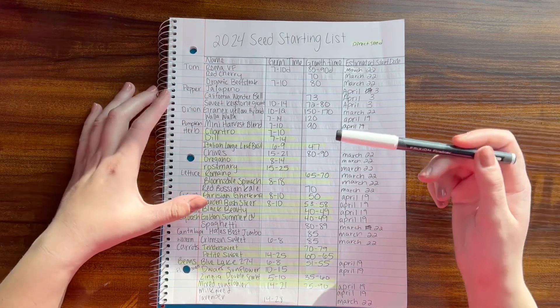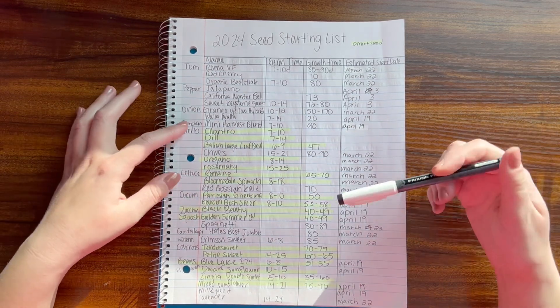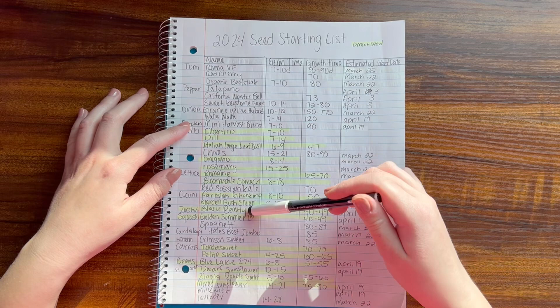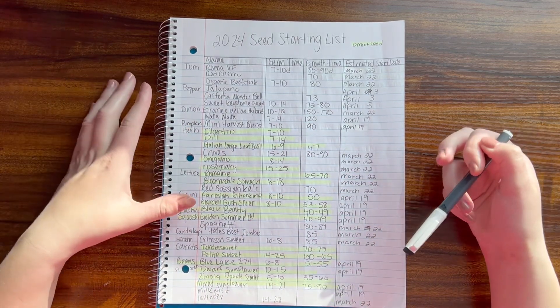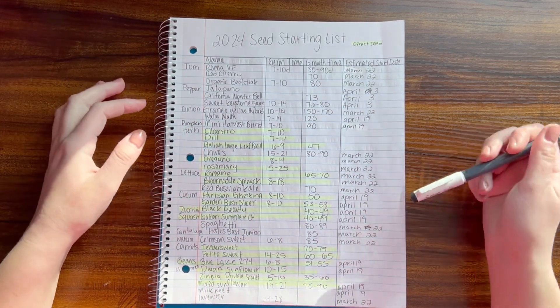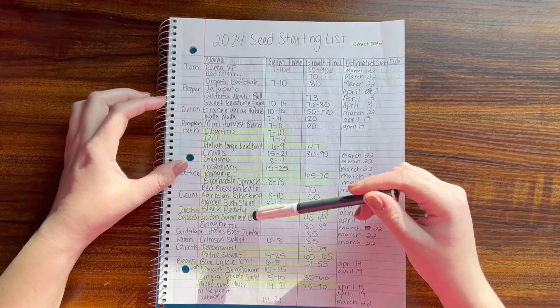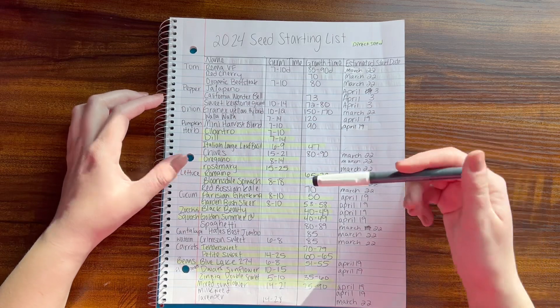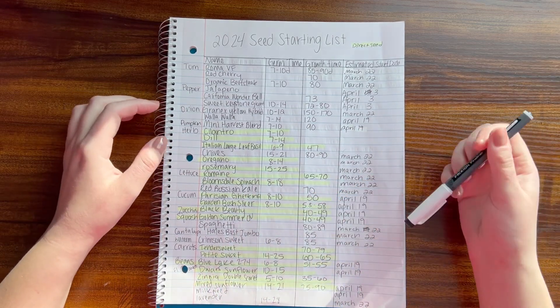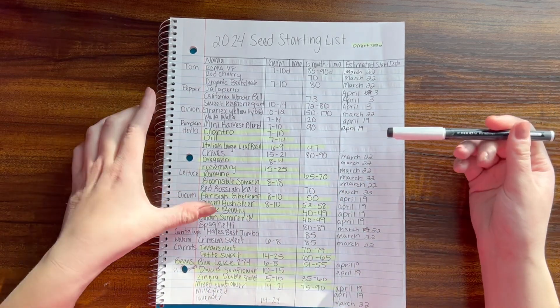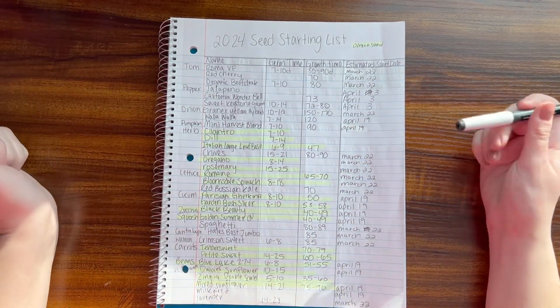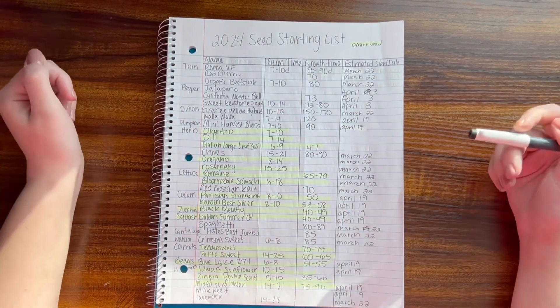For zucchini, I learned that my dad really likes zucchini bread, so I'm going to grow a couple plants of zucchini and start those on the 19th. I'm going to do some golden squash, Golden Summer Crookneck Squash, on the 19th as well. I'm going to try some squash. I've had it before in passing, so I want to see it fried up and whatnot - southern recipes basically - to see if I like it.